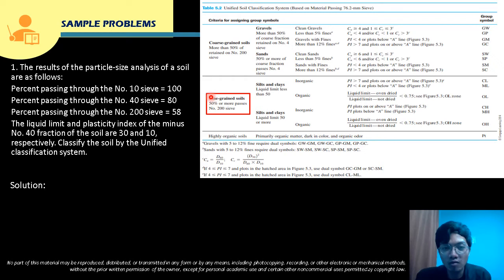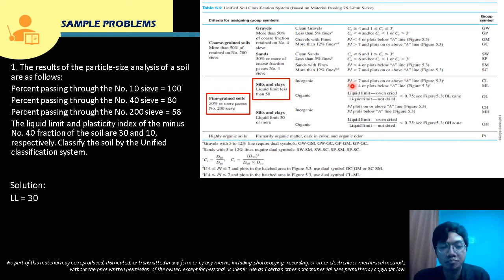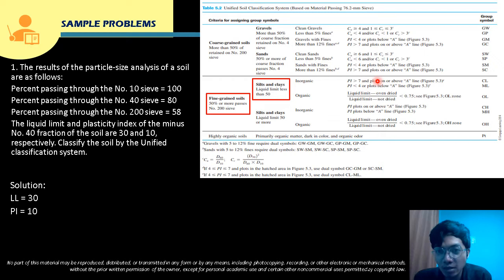Under fine-grained soil, we check the liquid limit. LL = 30, which is less than 50, so it falls in the LL < 50 category. It can be inorganic or organic. Checking the criteria: PI = 10, which is greater than 7. But we must also satisfy the 'and' condition — we need to plot LL and PI on the plasticity chart.